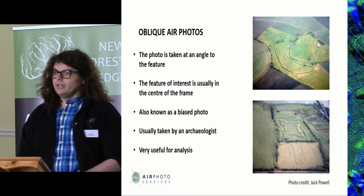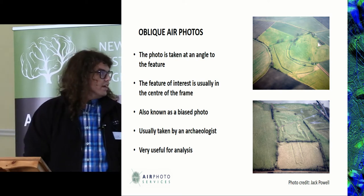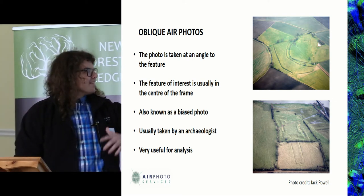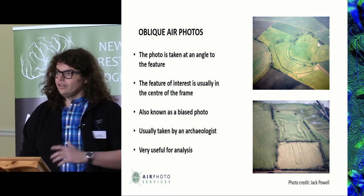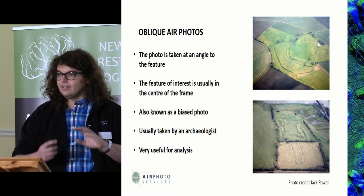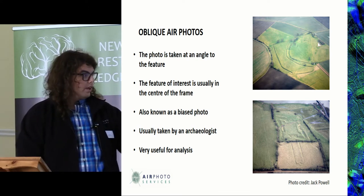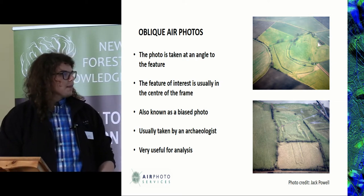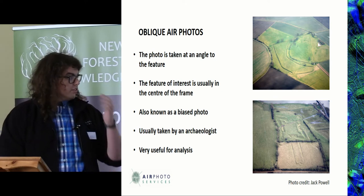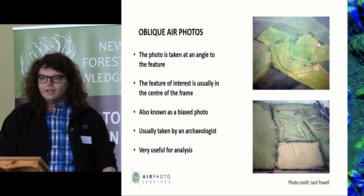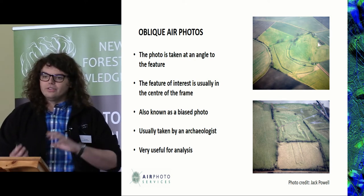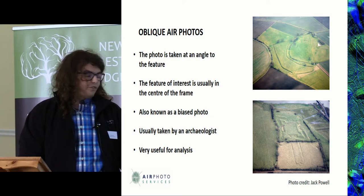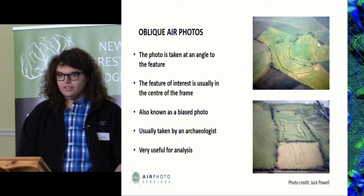The first type of air photos we use regularly for archaeological inspection is oblique air photos. There are a lot of exceptions to the rules I'm going to be saying, but oblique air photos are usually taken from an angle to the target — usually out of the window of a light aircraft with a DSLR — with the archaeological feature usually in the center of the frame. They are known as biased photos, as the interpreter or photographer has actively chosen to take the photo of the archaeological site.